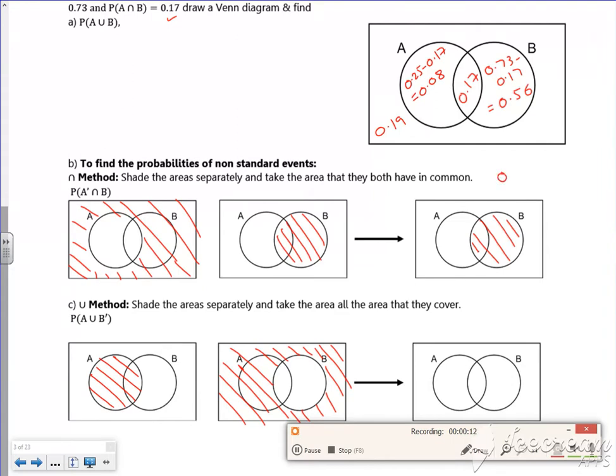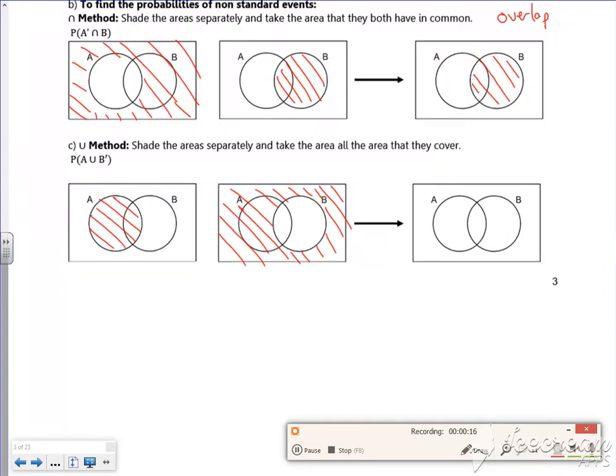So this one's where the overlap is, and for OR it's anything that's shaded. So anything that's shaded will be there. Not too much when you do it.